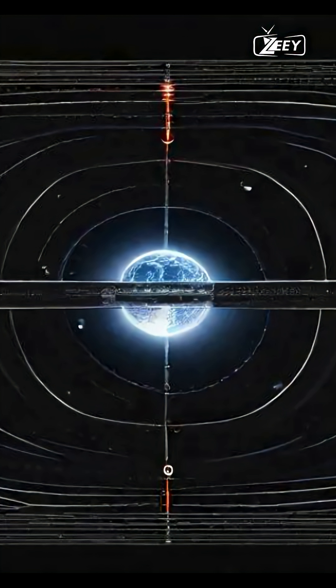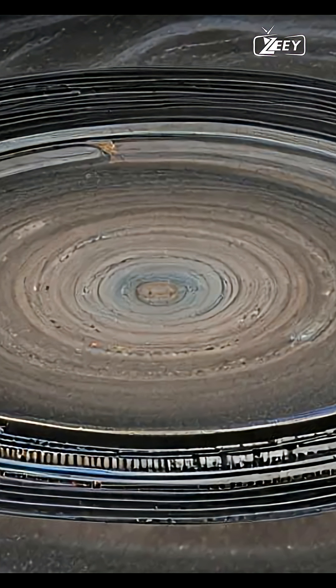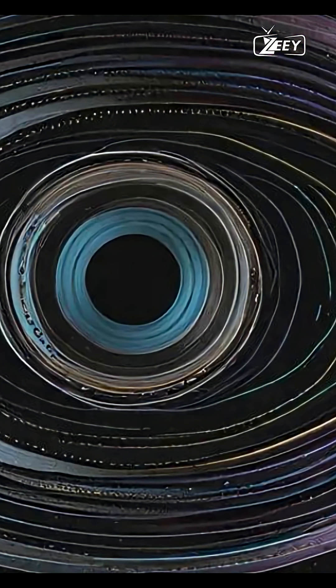But Earth isn't defenseless. Surrounding our planet is a powerful and dynamic magnetic field, and within that field are two vast, invisible zones of trapped radiation. These are the Van Allen belts, a natural shield holding back the worst of space weather and allowing life to flourish below.